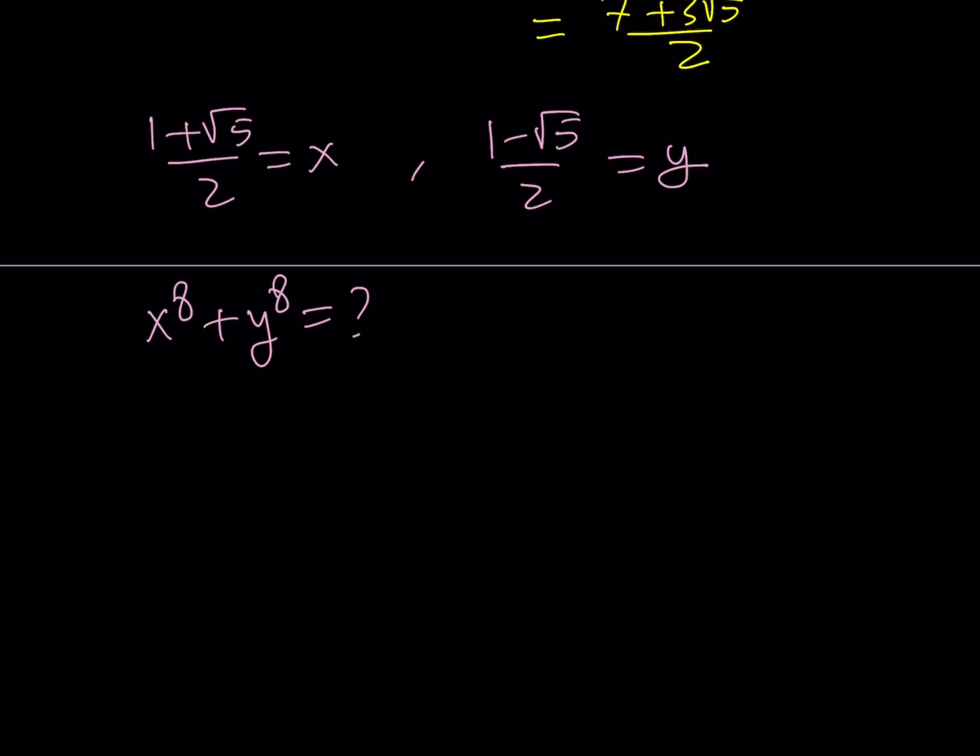First of all, notice that x plus y is equal to 1 plus root 5 over 2 plus 1 minus root 5 over 2. The root 5 cancels out, leaving us with 2 divided by 2, which is 1.